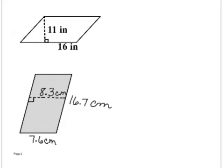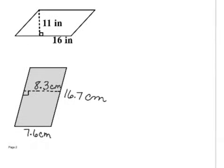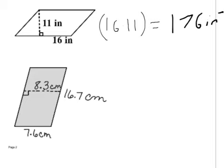All right, we have a parallelogram with 11 for the height, 16 for the base. So this is base, this is side. 16 times 11 is equal to 176. Now this is inches squared because it's area, and it's asking for a squared unit.